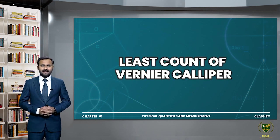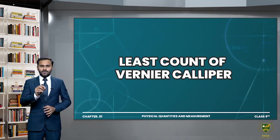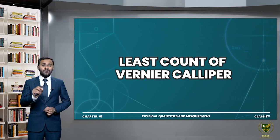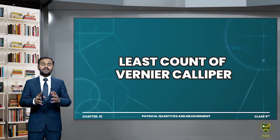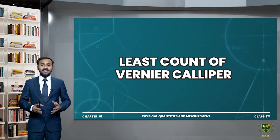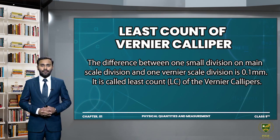Now if we talk about the least count of Vernier Caliper — what is the least count of Vernier Caliper? The difference between one main scale division and one Vernier scale division is the least count of Vernier Caliper, which is 0.1 millimeter.